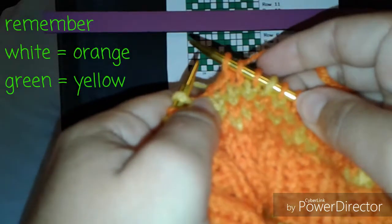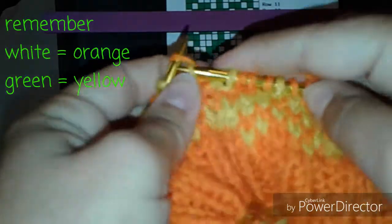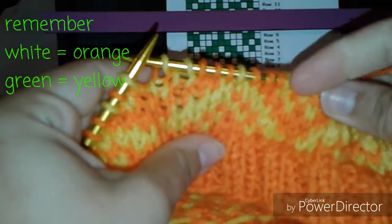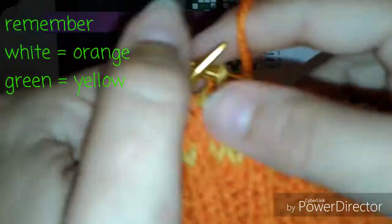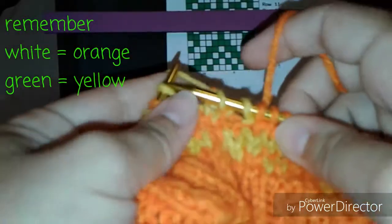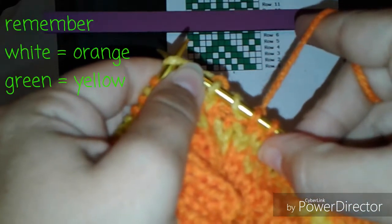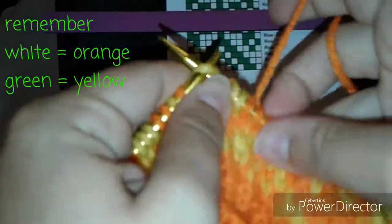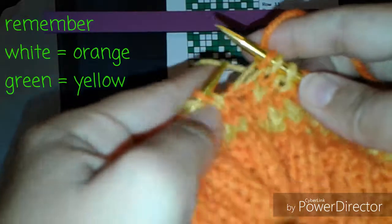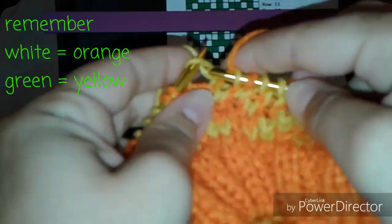The last two stitches are both yellow. One more time and then we switch to a new row. We have the start of the row over here. Let me do one orange, two yellow.